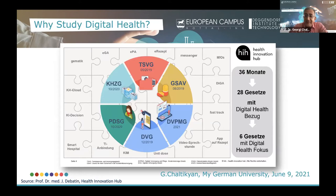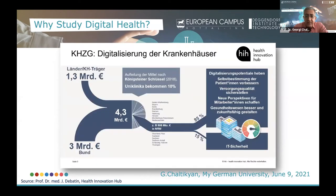In the past 36 months, there were 28 legislative acts — laws or statutes — passed with some relation to digital health, including six laws with digital health in focus. Among them is the Krankenhaus Zukunftsgesetz, the future hospital law, which will provide 4.3 billion euros in investment to digitalize the healthcare system in Germany.